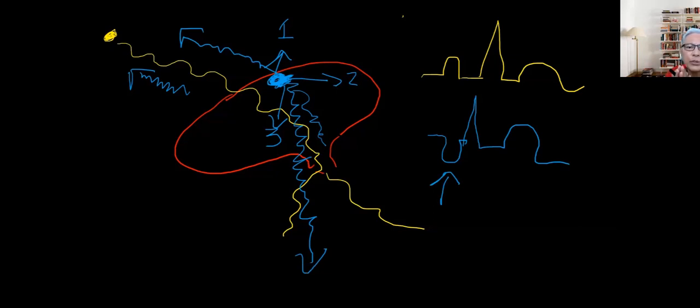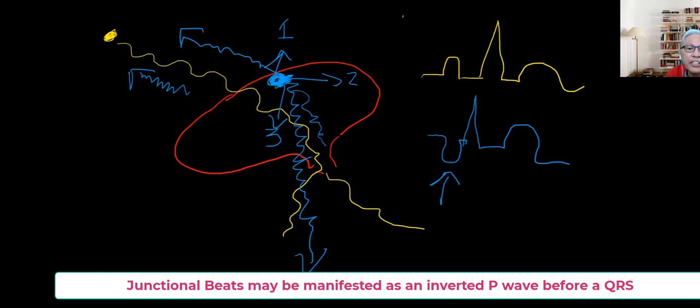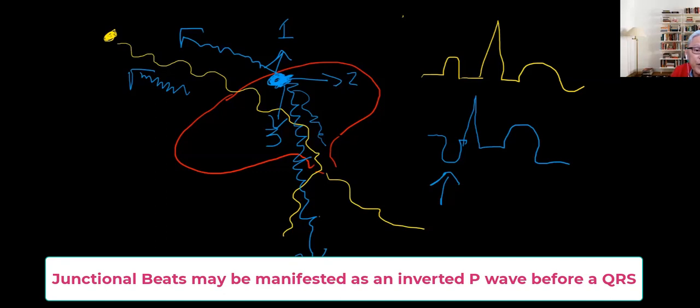This is one of the characteristics of a beat that comes from the AV node, an inverted P wave before the QRS complex. So that's the first characteristic. There is an inverted P wave before the QRS complex.